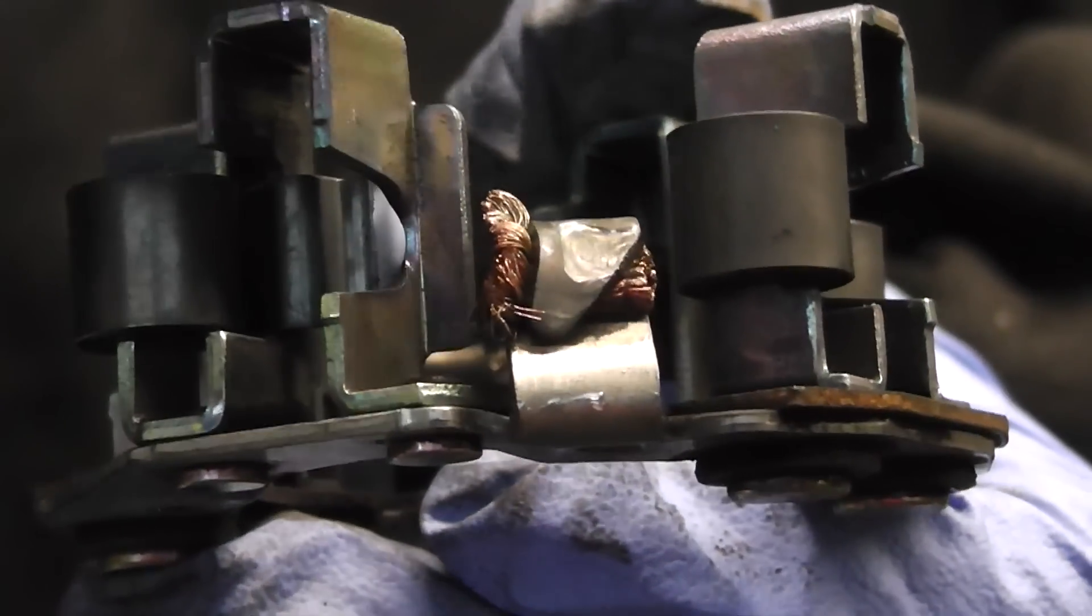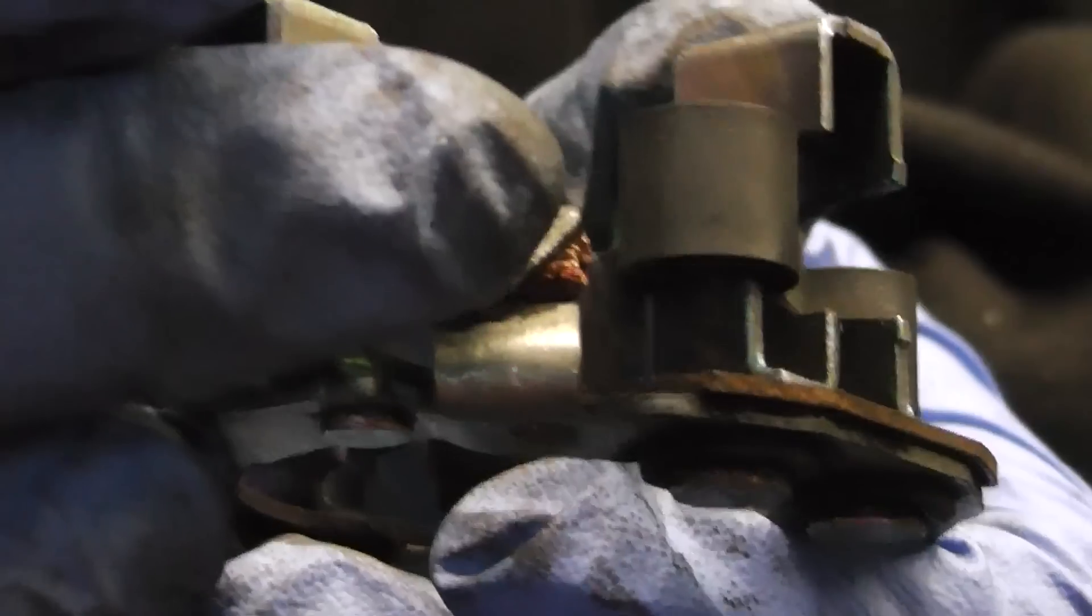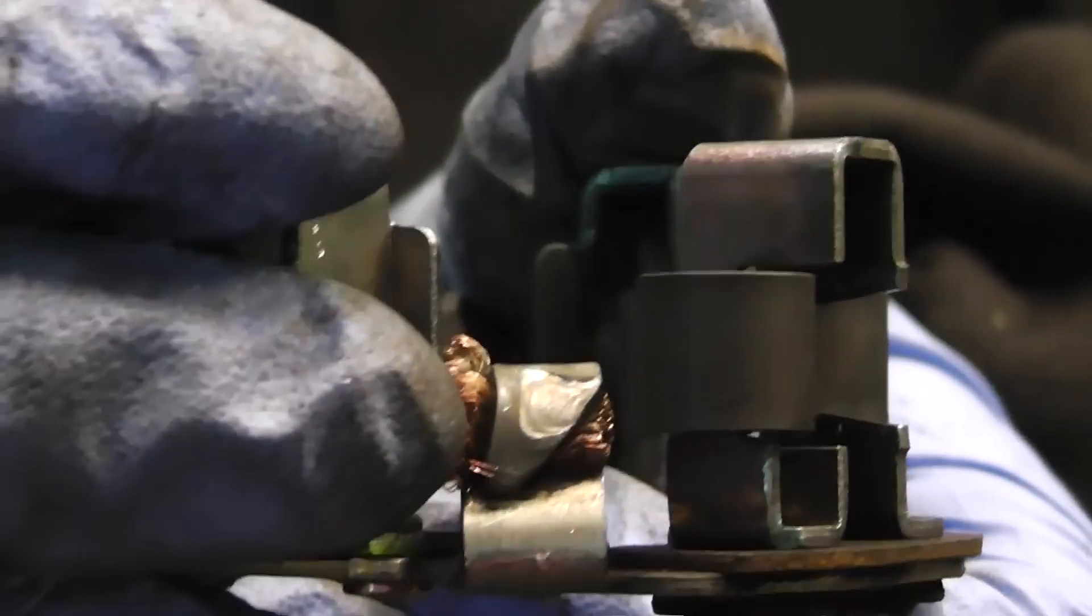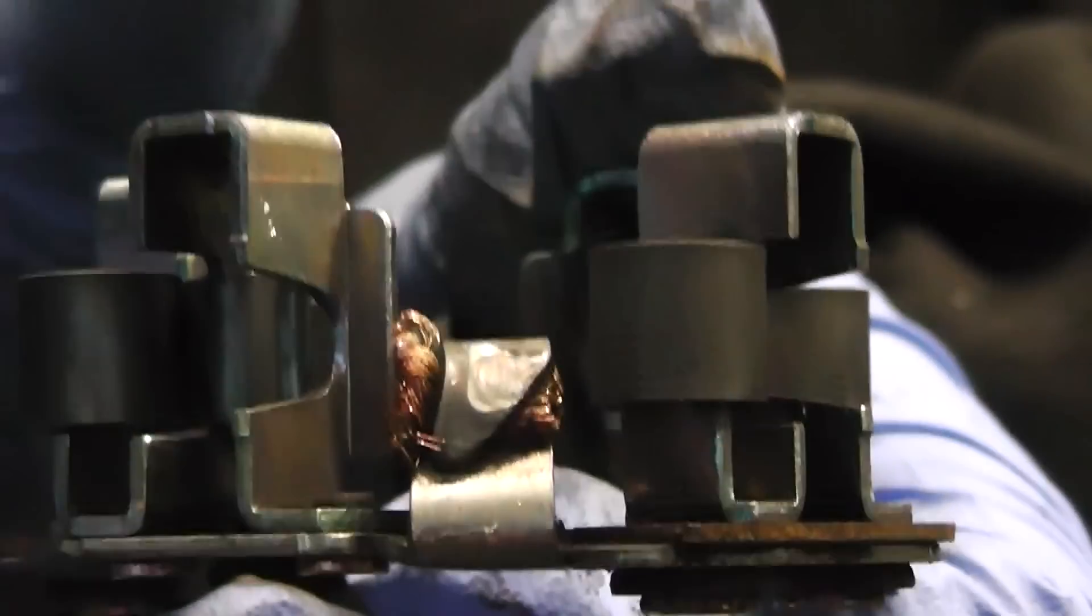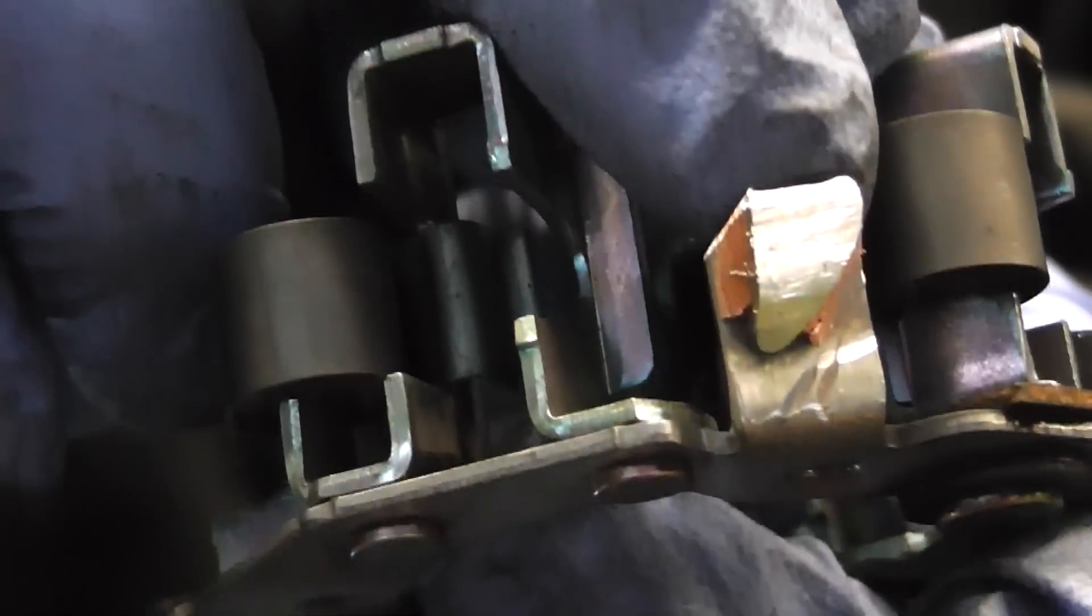Now what we have to do is clean up the surface where the brush is going to be soldered. We can use grinding stone, file or just simply scrape it off with the screwdriver as long as it's nice and shiny. That's what we want. Now as you can see this surface is nice and clean now.